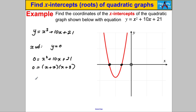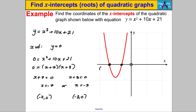We solve by factorizing: 0 = (x + 7)(x + 3). Therefore x + 7 = 0 or x + 3 = 0, giving x = -7 or x = -3. The coordinates are therefore (-7, 0) and (-3, 0). These look sensible — both x values are negative because the whole graph is to the left side of the y-axis.